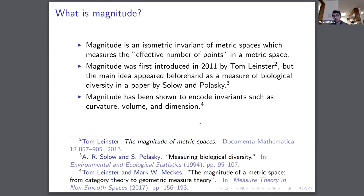It's been shown to encode invariants such as curvature, volume, and dimension. The most compelling of these, I think, is specifically dimension. This is a really strong result, and it's the one that we're going to drill down on more here.